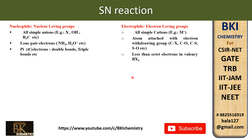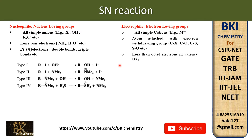This is the electrophile classification. The electrophile is either positively charged or neutral, and the nucleophile is either negatively charged or neutral. Combining these two gives four types of SN reaction: Type 1 — neutral electrophile with negatively charged nucleophile; Type 2 — neutral electrophile with neutral nucleophile; Type 3 — positively charged electrophile with negatively charged nucleophile; Type 4 — positively charged electrophile with neutral nucleophile.